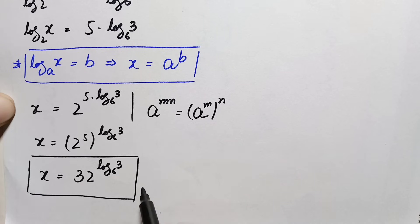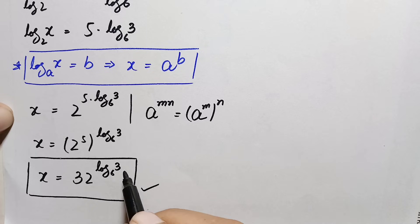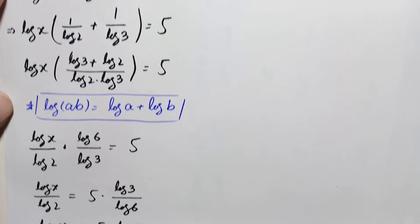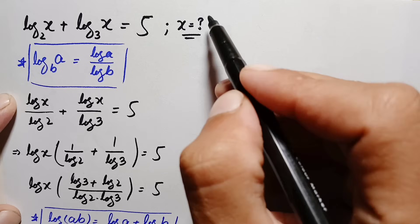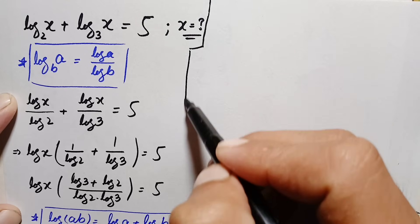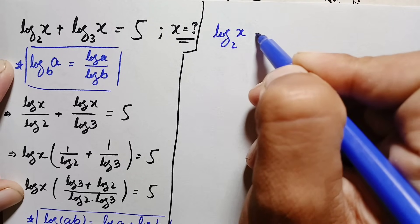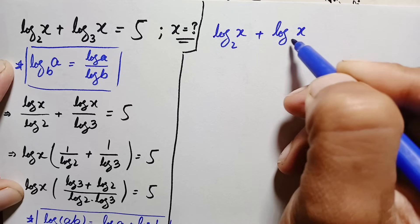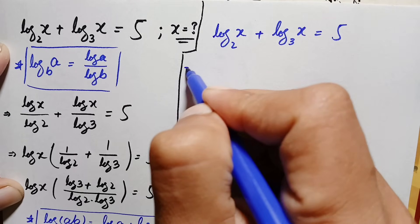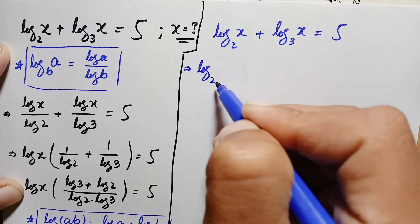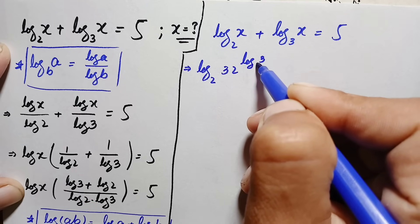So x equals 32 raised to power log of 3 with base 6 is our final answer. Now we will verify this value. Our original question is: log of x with base 2 plus log of x with base 3 equals 5. Substituting x, the left hand side becomes: log base 2 of (32 raised to power log₆3) plus log base 3 of (32 raised to power log₆3).